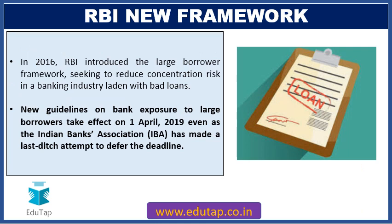In 2016, RBI introduced the Large Borrower Framework aimed at reducing concentration risk in the banking industry, which was laden with bad loans at the time. RBI did not want a bank exposed to any entity beyond a specified percentage, so it came up with elaborate guidelines. These guidelines were deferred but are now finally coming into force on April 1, 2019. Even though the Indian Banks' Association sought to extend the deadline, RBI made the new Large Exposure Framework applicable.